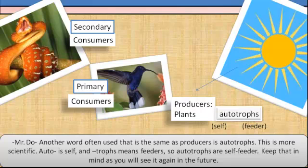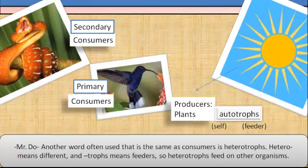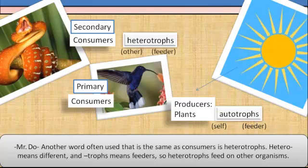Another word often used that is the same as consumer is heterotrophs. Hetero means different, and trophs means feeders. So heterotrophs feed on other organisms, like the bird and the snake.